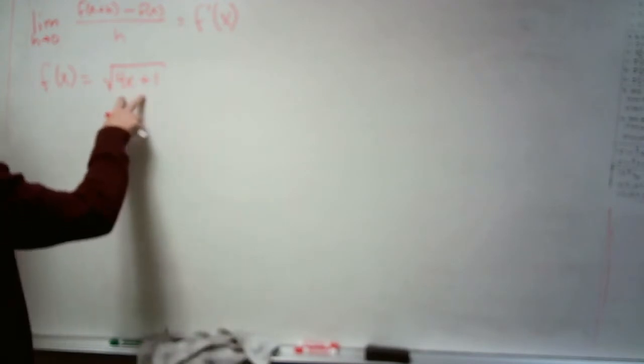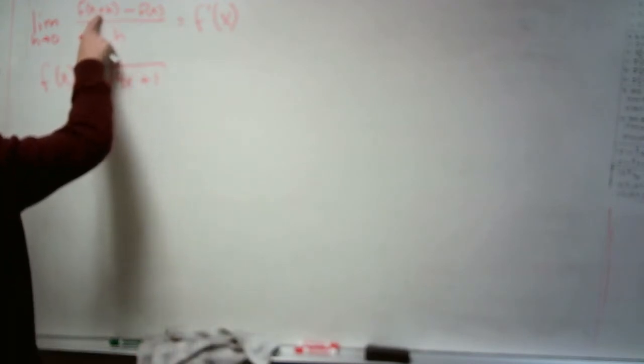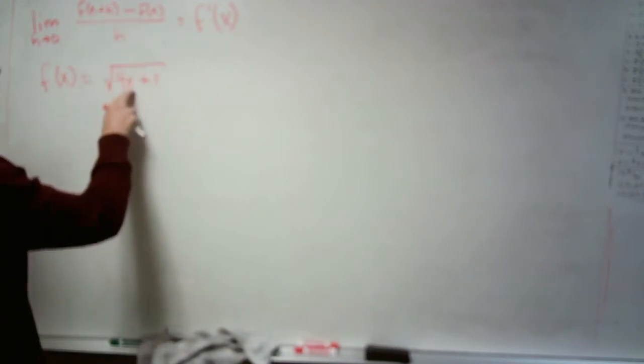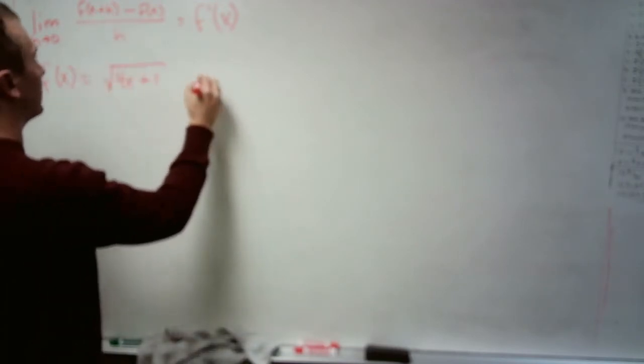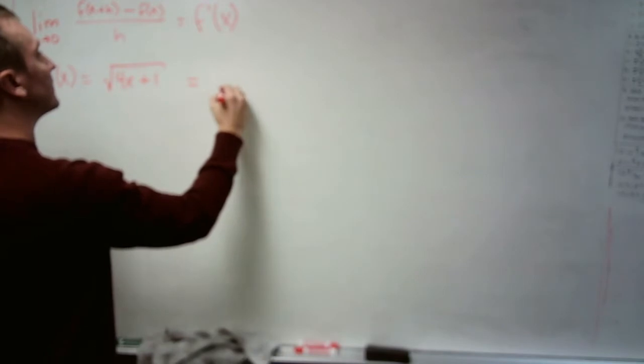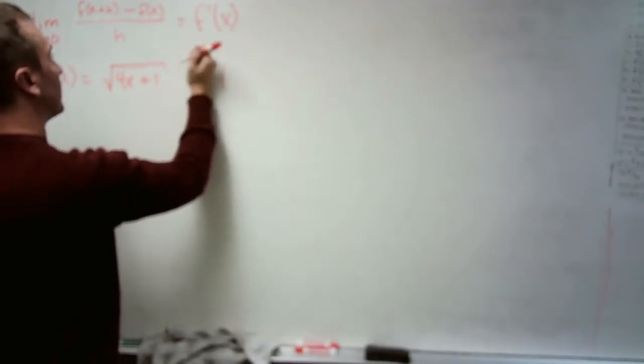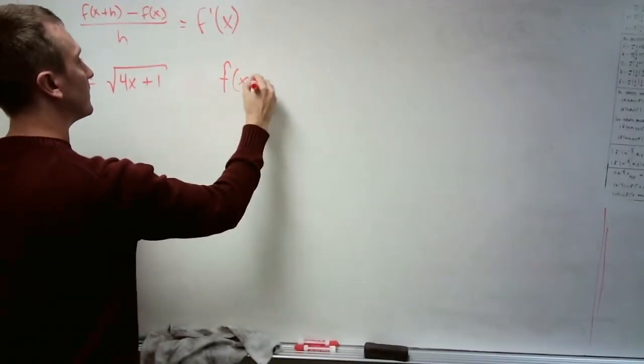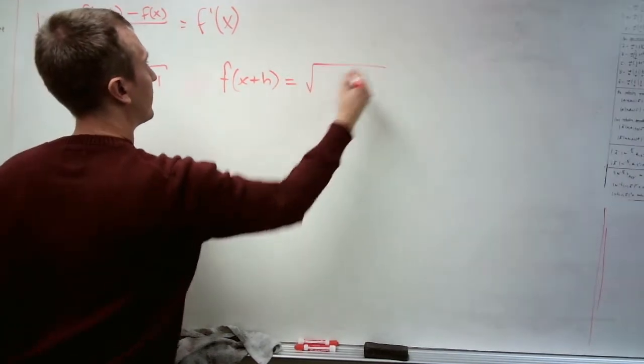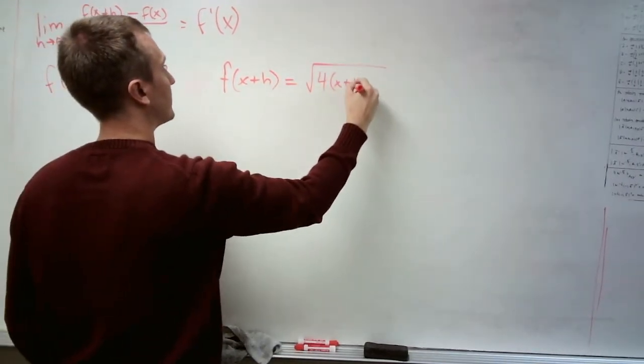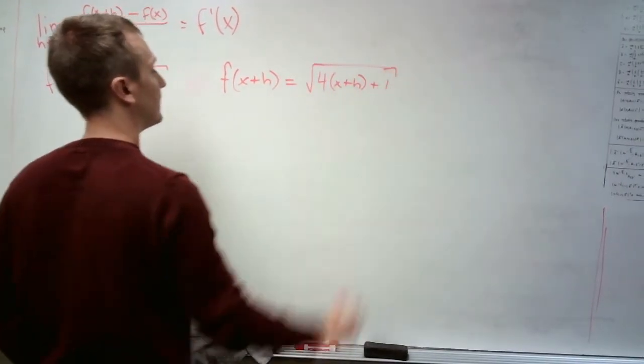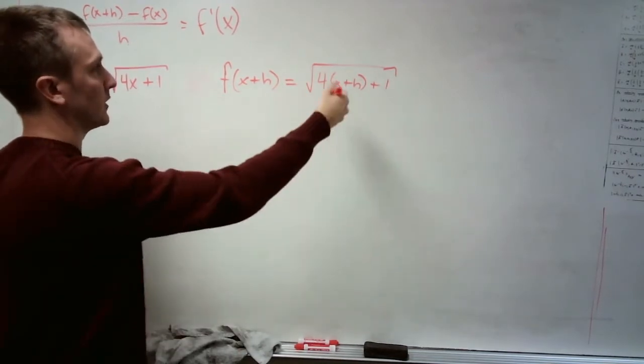So again, like before, the first thing that we're going to find after being given our original function is f of x plus h. We're going to compose x plus h into our original function. So we have f of x plus h equaling the square root of 4 times x plus h plus 1, which is 4x plus 4h plus 1.